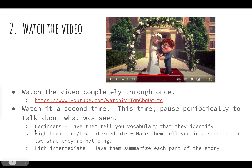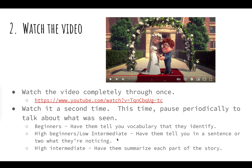If you have a student who's a beginner, have them tell you some of the vocabulary words that they can identify in the film. For high beginners and low intermediate students, have them tell you in a sentence or two what they're noticing. For high intermediate students, have them summarize verbally each part of the story. It's important to have them do these activities verbally first, because then they're recalling words in English. Writing is much harder than speaking for English language learners. So speaking leads towards better writing through vocabulary and sentence structure used in conversation — you're going to get a better written product by starting with a spoken activity.